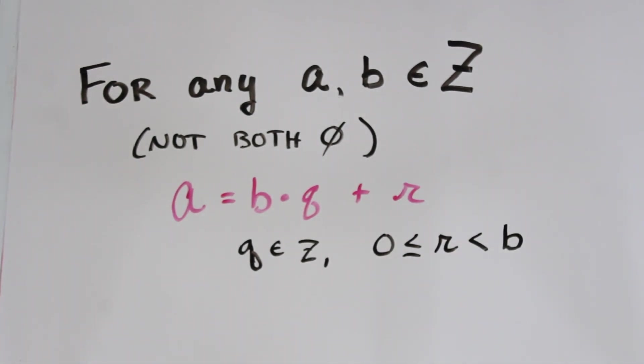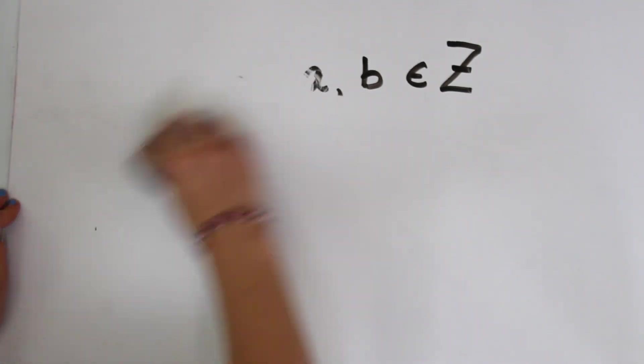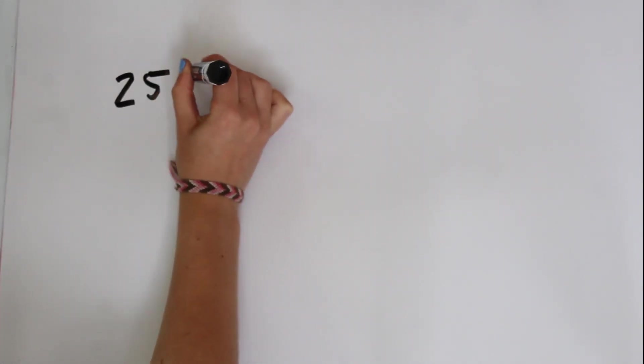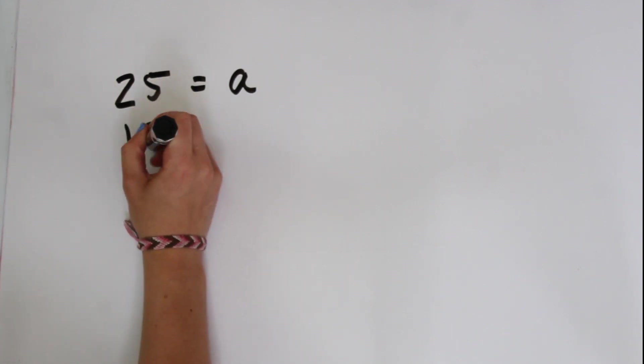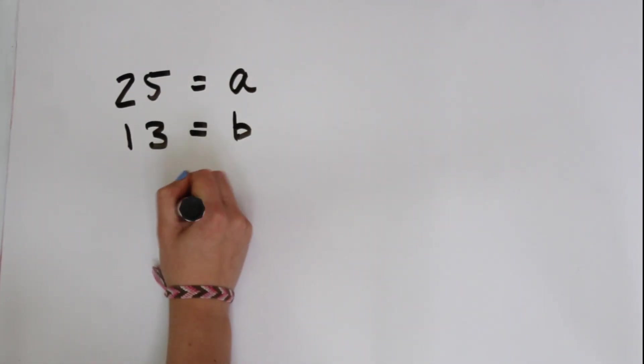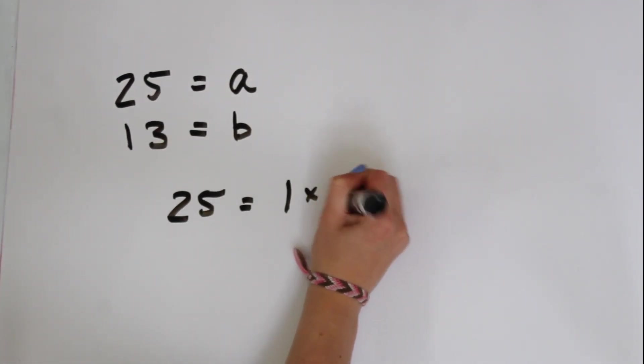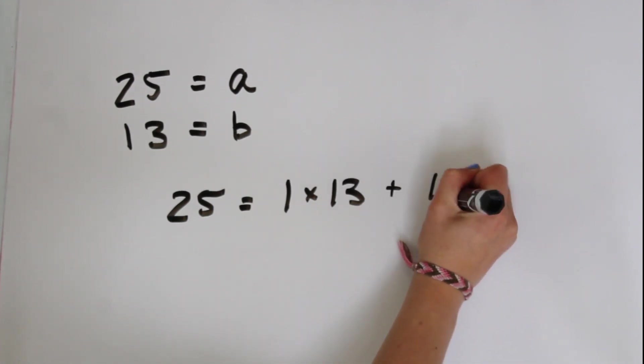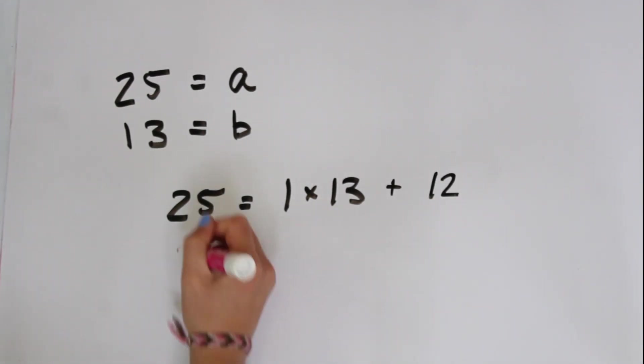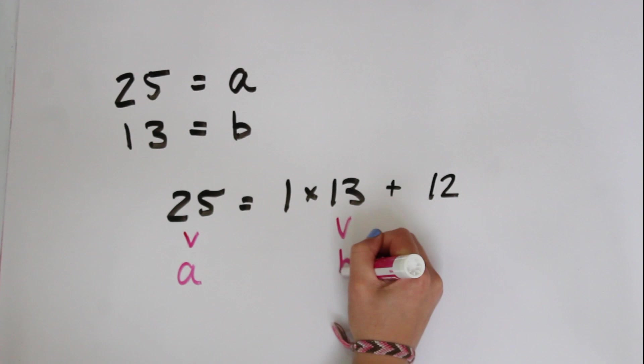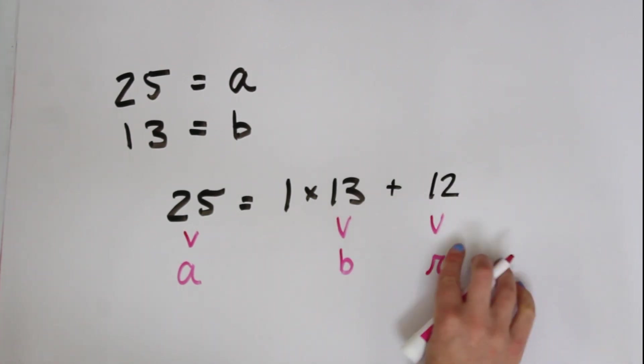For example, if I gave you A = 25 and B = 13, we would write 25 = 1 × 13 + 12, where 25 is A, 13 is B, and 12 is R. Like last time, we could set 25 as congruent to 12 mod 13.